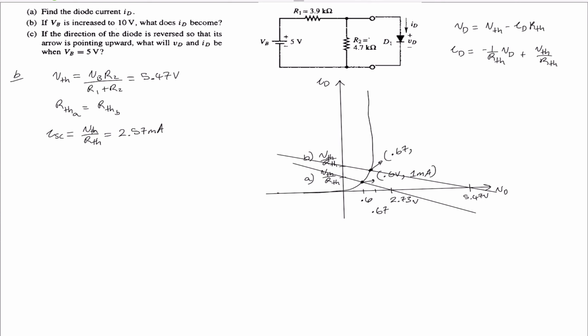Finding Id for section B, we do the same calculation: Id equals Vthevenin(B) minus Vd, all over Rthevenin. That is going to equal approximately 2.3 milliamps. So the operating point is approximately 2.3 milliamps for Id.